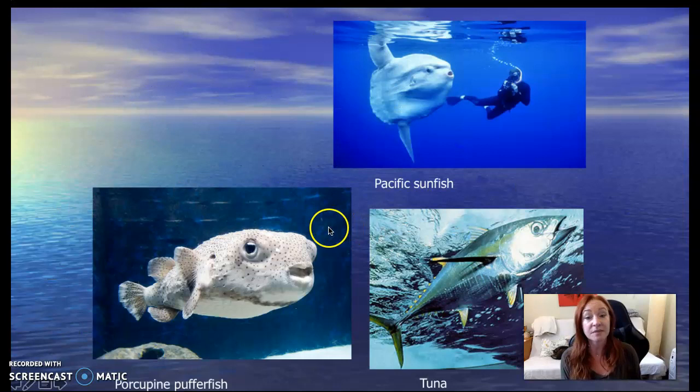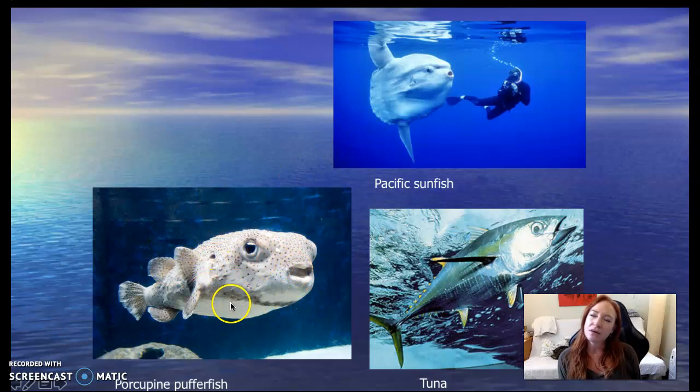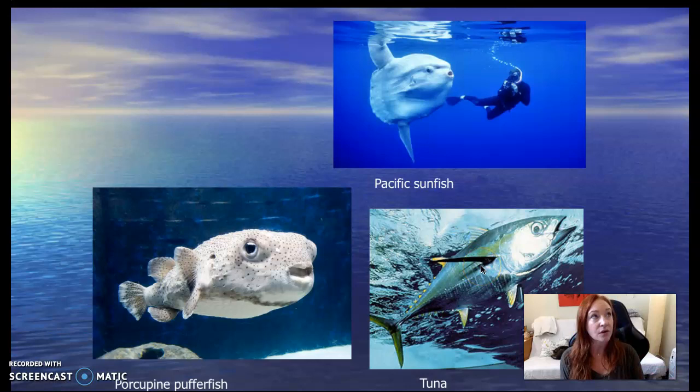Here are some examples of pelagic bony fish. This is a Pacific sunfish — mola mola are weird but also kind of awesome. This is a porcupine pufferfish — they're not super pelagic, they stay kind of close to the coasts, but they're incredibly cute. And then tuna — pelagic fish that are kind of the default setting. They're huge, really valuable, really fast, and pretty great predators, as you saw when you researched open ocean predators.